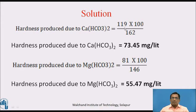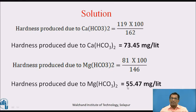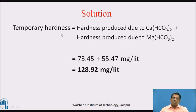By putting the given values into the formula: hardness due to calcium bicarbonate = 119 × 100 ÷ 162 = 73.45 mg/L. Hardness due to magnesium bicarbonate = 55.47 mg/L. Temporary hardness = 73.45 + 55.47 = 128.92 mg/L.